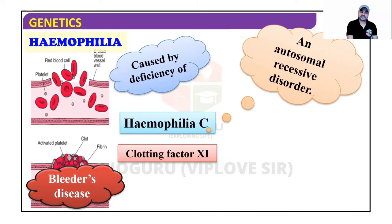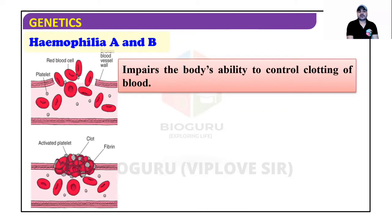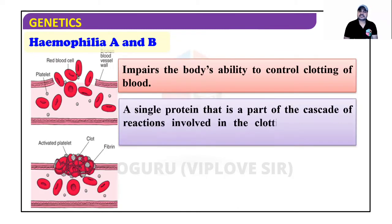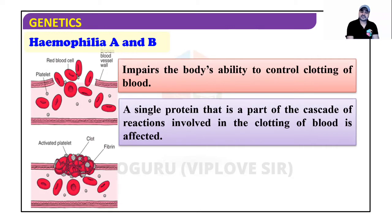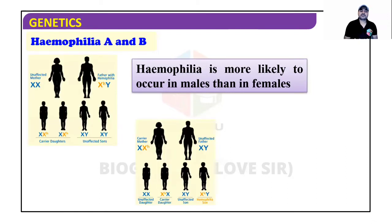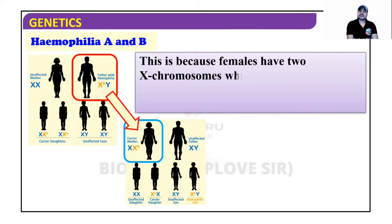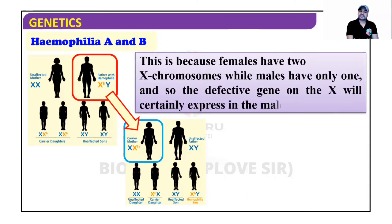Hemophilia C is caused by the deficiency of clotting factor 11 and is an autosomal recessive disorder. Hemophilia impairs the body's ability to control blood clotting, involving a cascade of 13 factors. The defective gene on the X chromosome will certainly be expressed in males, since males carry only one X chromosome.